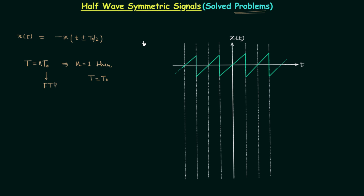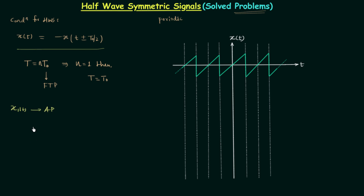Half wave symmetric signals are always periodic. You can see that the condition for half wave symmetry involves T₀, the fundamental time period, which is only defined for periodic signals. So if a signal x1(t) is aperiodic or nonperiodic, there is no need to check for half wave symmetry. You can straight away say that it is not half wave symmetric, because for aperiodic signals the time period is not defined, and if the time period is not defined you cannot check this condition.